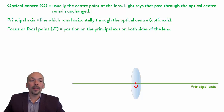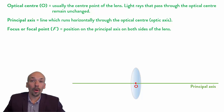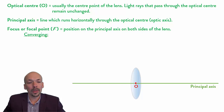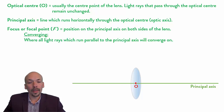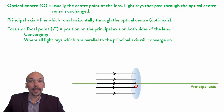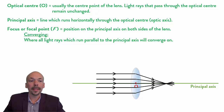Now we can determine the focus or focal point, marked with a capital F. This is a position on the principal axis on both sides of the lens. When we are using a converging lens, you can find the focus where all light rays which run parallel to the principal axis will converge on. So all light rays hitting the lens parallel will converge on one single point — this is the focus or the focal point, marked with a capital F.